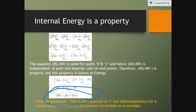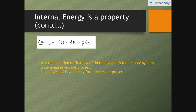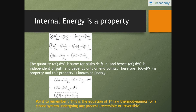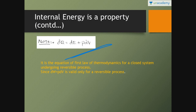DQ equals dE plus DW is valid for any process — reversible or irreversible. However, DQ equals dE plus P·dV is the equation of first law for a closed system undergoing a reversible process. The moment DW is written as P·dV, the equation is valid only for a reversible process.